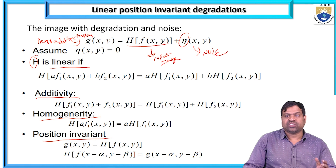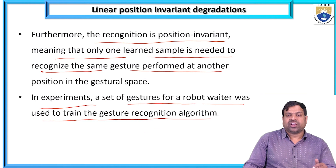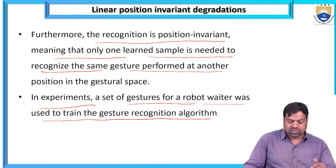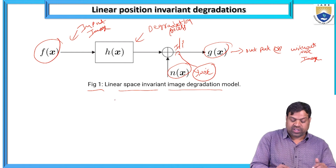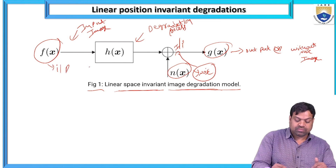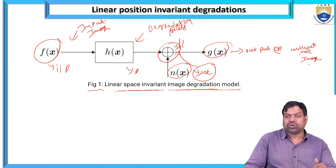The conditions are: when it is linear, when it is homogeneous, when it is additive, or when it is invariant. The recognition is position invariant, meaning only one training sample is needed to recognize the same gesture performed at another position. This is the figure about the linear space invariant image degradation model where f(x,y) is the input, there is a degradation process, noise is added as additive noise, and G(x,y) is the output without noise.